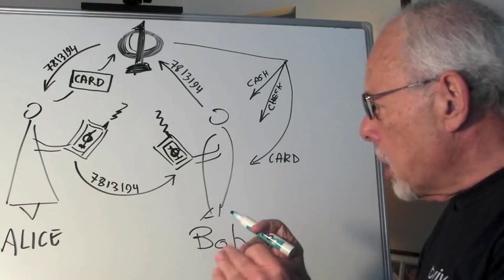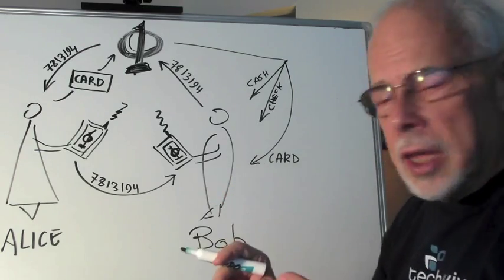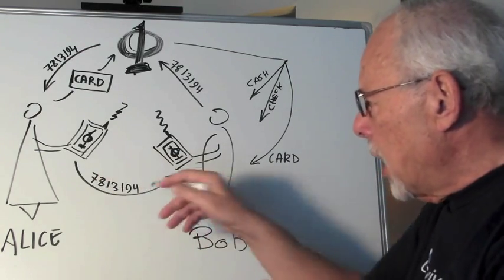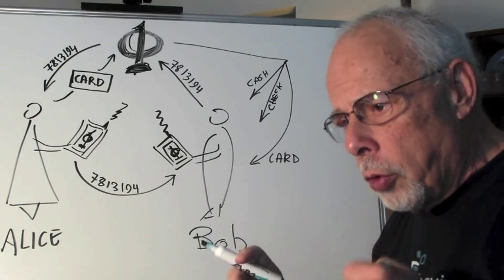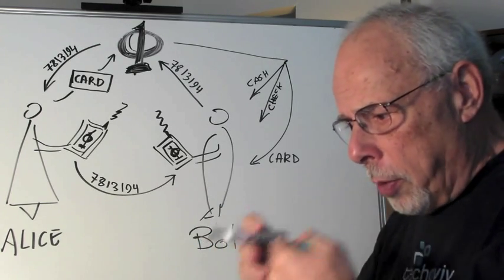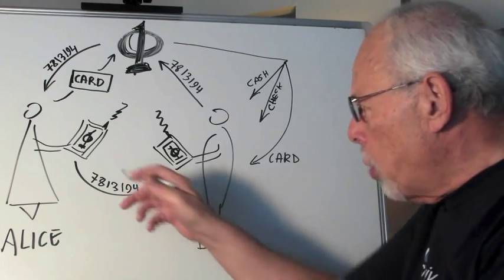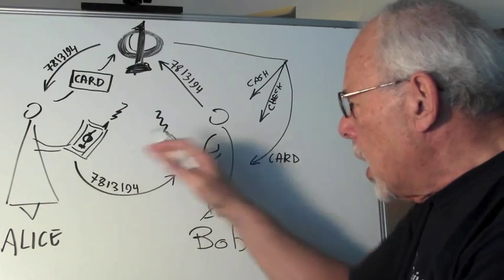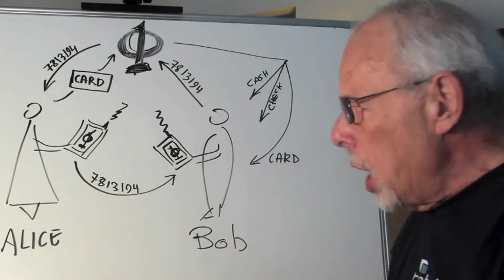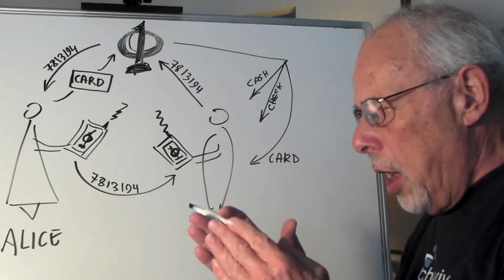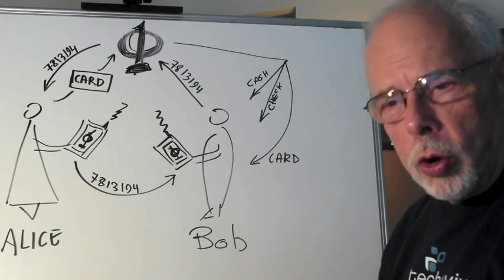The concept is that a transaction between Alice and Bob is done by sending a sequence of digits from phone to phone, from phone to computer, or via a printout and a barcode reader — any which way the sequence can travel in the simplest, fastest, most convenient way. Bob and Alice can be facing each other or on different continents. It always works.